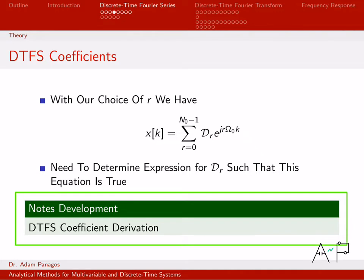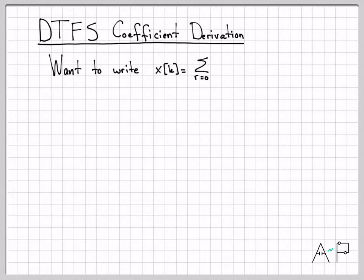So let's go ahead and do that. Let's actually derive an equation for the Dr. So first, let's just go ahead and write down the equation that we had for the DTFS representation. There it is. And as a reminder, again, we're dealing with periodic signals x[k], which means that x[k] has a fundamental frequency ω₀, and ω₀ is always equal to 2π over N₀, where N₀ is the period of the signal, the number of samples it takes for x[k] to start repeating.